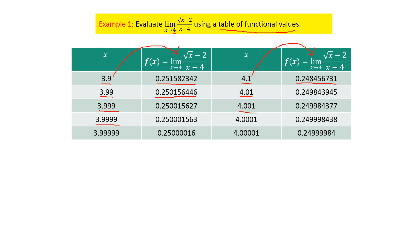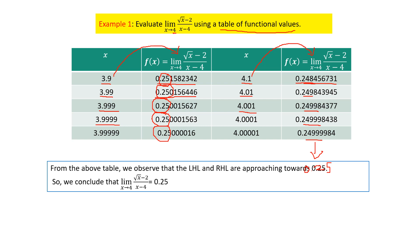Looking at the second column, all values are approaching 0.25, so the left-hand limit equals 0.25. For the right-hand limit the values — 0.248, 0.249, 0.2499, 0.24999 — are also approaching 0.25. Since the left-hand limit equals the right-hand limit, we conclude that the limit of (√x − 2)/(x − 4) as x approaches 4 is equal to 0.25.